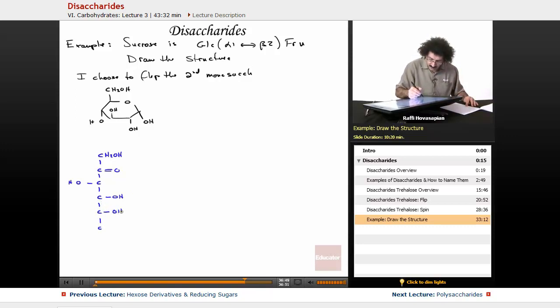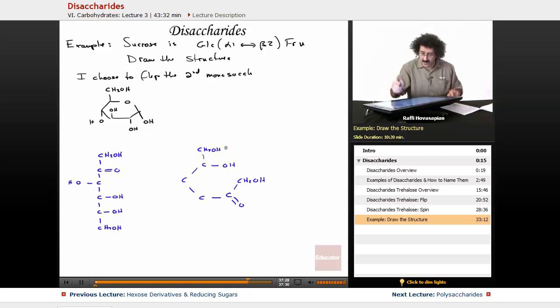This is CH2OH. This is a ketone, a ketose. The number two carbon actually has the carbonyl. So I'm drawing out the linear form. This is OH, and this is CH2OH. So this is the linear form.